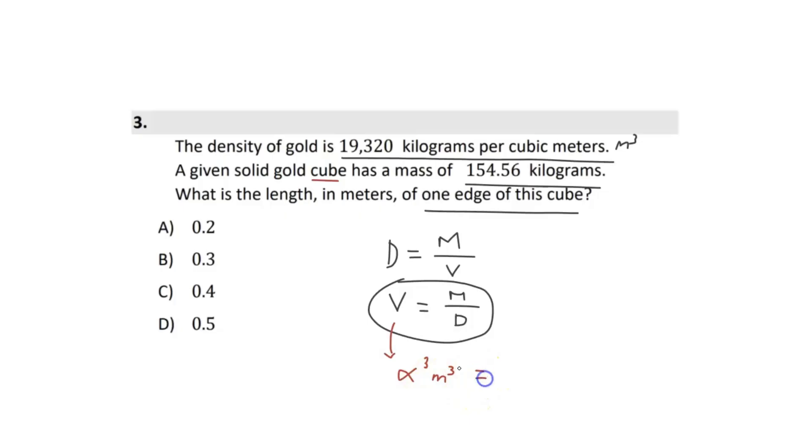So now we can set this equal to. So volume corresponds to this. Now, what do the other parts correspond? Well, this top part is the mass. Well, let's give them right here. 154.56 kilograms. Boom. Perfect. Now, what is under it? That is our density. And guess what? Our density is nicely given right here as well.